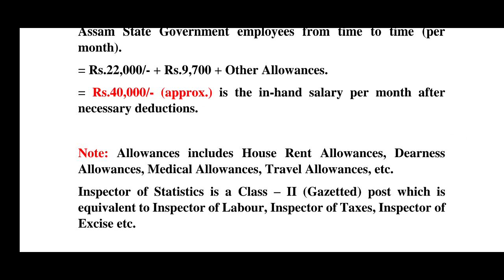Note that the allowances include house rent allowance, dearness allowance, medical allowance, travel allowance, etc. The Inspector of Statistics is a Class 2 gazetted post, which is equivalent to the Inspector of Labour, Inspector of Taxes, Inspector of Excise, etc.